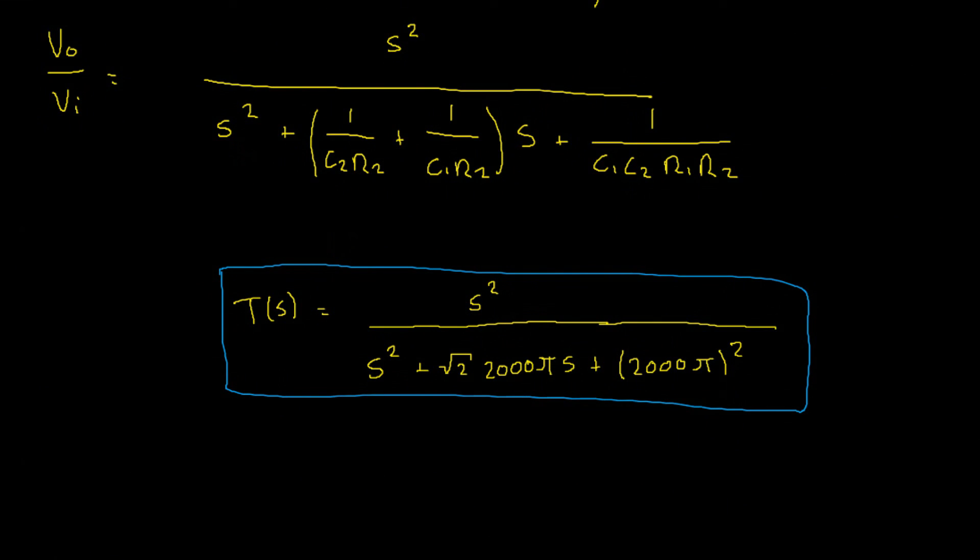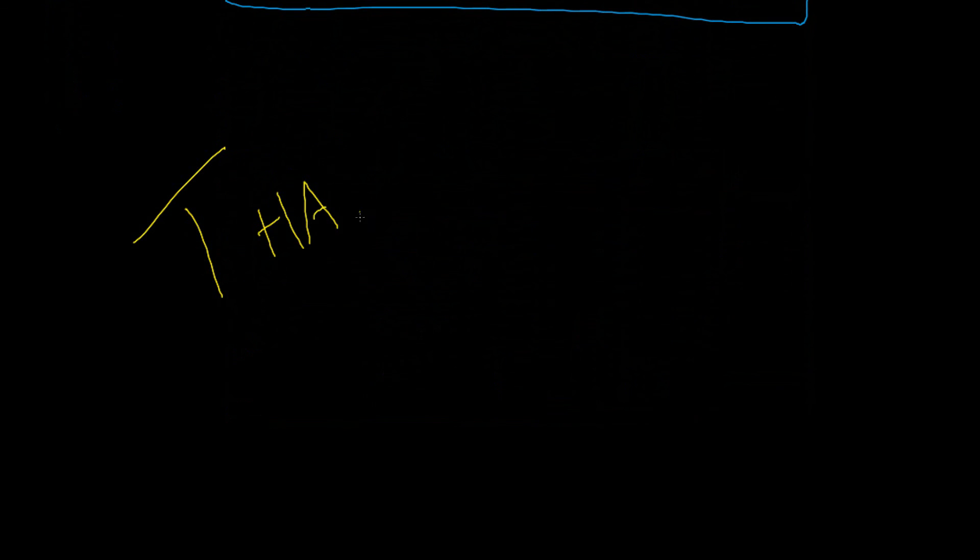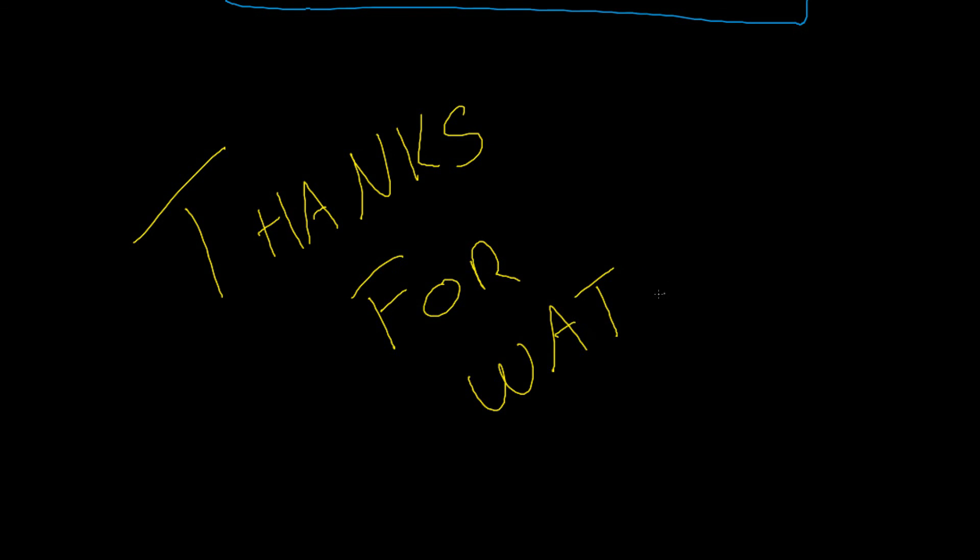There we have it. We can now equate the coefficients in our terms to find values for C2, C1, R1 and R2. Okay guys, thanks for watching. Sorry, we didn't quite get to the relating coefficients. We're out of time, unfortunately. Our next video will be dedicated to finding component values to give us that transfer function. Okay, if you had any problems at all, feel free to leave a comment down below and I'll get back to you, and I'll see you guys in the next one.